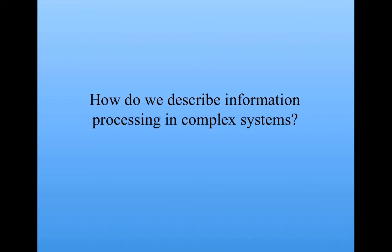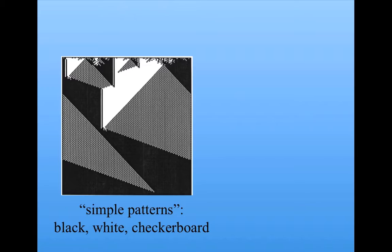The bigger question is, how do we describe information processing in complex systems? Well in these cellular automata we notice that there's some simple looking patterns. There's an all black pattern, there's an all white pattern, and there's this kind of grayish pattern which turns out to be a checkerboard like pattern with alternating black and white cells. Those are the three kinds of patterns we see after the initial transient behavior.